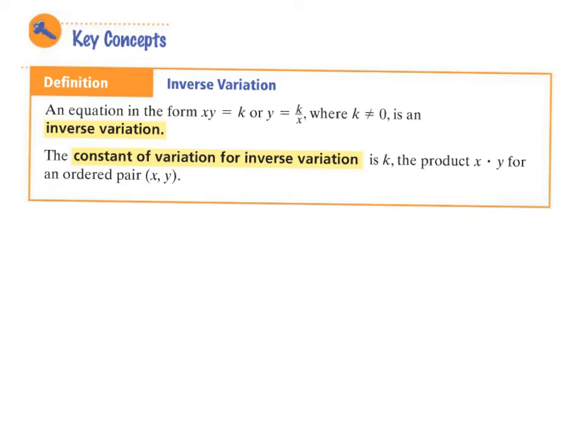Here is what you do need to write down. This is your definition, your key concepts of inverse variation. An equation that is in the form x times y equals k, or y equals k divided by x. Notice if we had xy equals k, if we solve this equation for y, you divide both sides by x and you would get that. Now, k cannot be 0. So make note of that. k cannot be 0. Because a number times itself, if we're talking about numbers, will not give you 0 here. This is called inverse variation. So that's your vocab word.